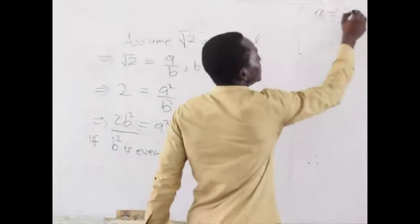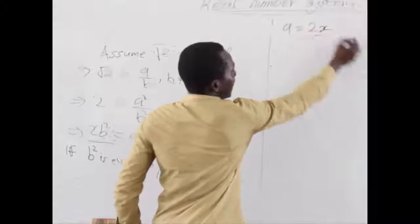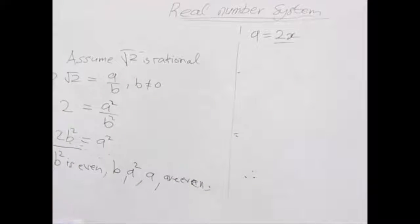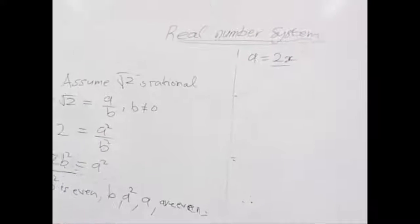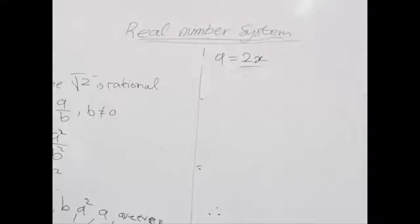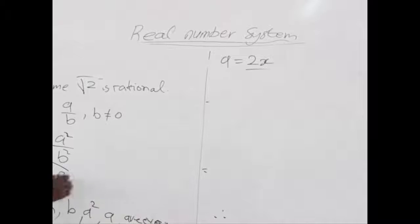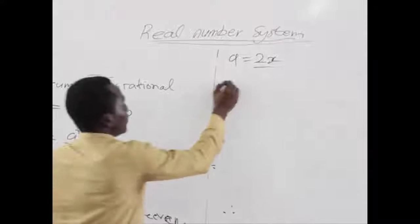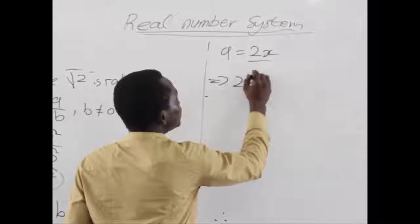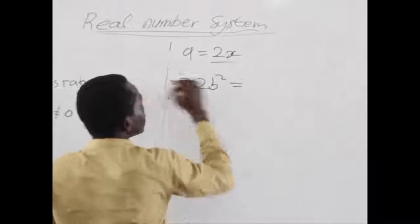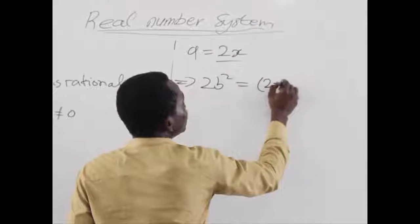So we say let a be equal to 2x. And 2x, everyone knows, is even. So we replace a with the expression 2x and place it back into our equation here. So we are going to have 2b squared equals 2x squared.